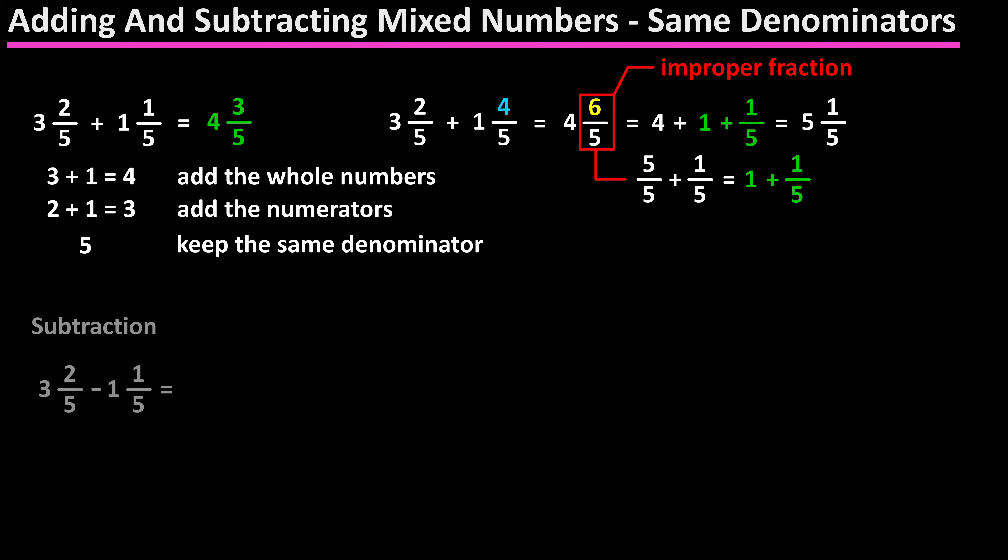If we were subtracting 3 and 2 over 5 minus 1 and 1 over 5, pretty much the same here, subtract the whole numbers, 3 minus 1 equals 2, then subtract the numerators, 2 minus 1 is 1, and keep the denominator of 5, so we have 2 and 1 over 5 as the final answer.